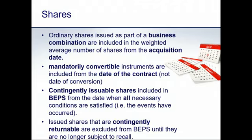An alternative structure is where the profit warrant runs as a continuous period over year one and year two. In that case, even if ahead of the run rate at year one, you cannot be certain there won't be reversals in year two. So if structured as a single continuous warrant, shares are only included at the end of year two when all conditions are met. The structuring of these transactions is very important because it affects the timing of the EPS impact over the warrant period.